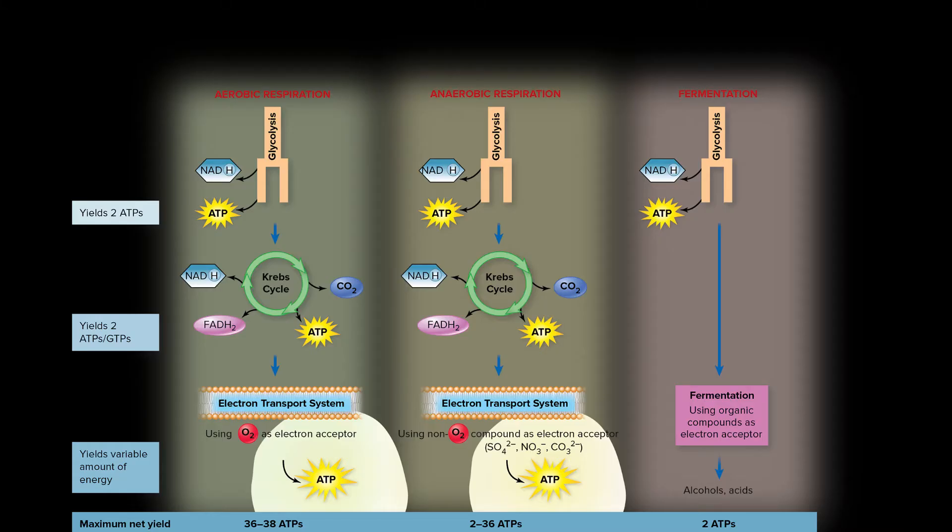Obligate or strict anaerobes can produce ATP via anaerobic energy production via glycolysis, the Krebs cycle, and the electron transport chain. An inorganic molecule like nitrate or sulfate is the final member of the electron transfer chain, not oxygen. Therefore, reactive oxygen species are not produced by obligate anaerobes, and they do not produce neutralizing enzymes like superoxide dismutase and catalase.